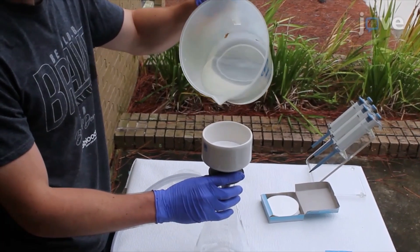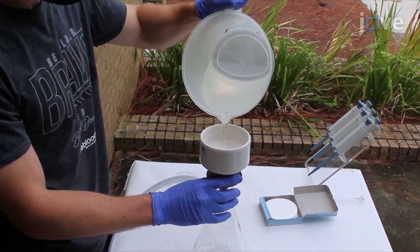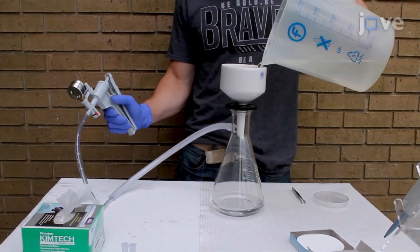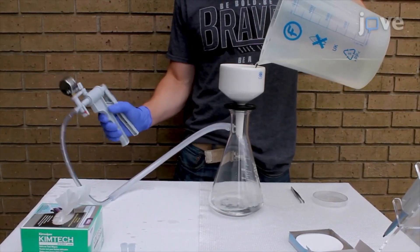Slowly pour between 50 to 1000 milliliters of test water over the filter paper inside the funnel while using the hand pump to create suction to pull the water through the funnel.